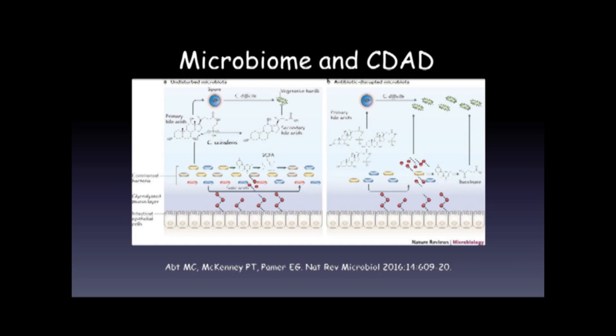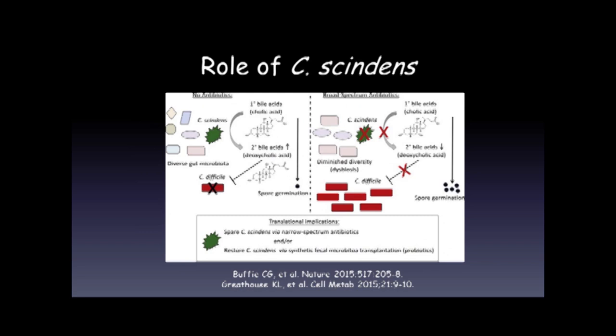These bacterial species such as C. scindens promote the conversion of primary to secondary bile acids, which inhibit C. difficile. Broad-spectrum antibiotics eliminate species such as C. scindens, therefore reducing the amount of secondary bile acids and promoting the proliferation of C. difficile.